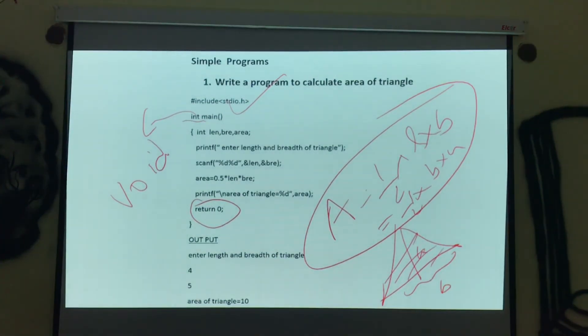Area is equal to half into length into breadth. And what we are doing? Printf, identifier for us to identify. Enter length and breadth of the triangle. Scanf, enter length and breadth respectively. And 4 and 5 we are giving, half into 4 into 5. This is nothing but our output. So answer is 10, 2 into 5, 10.